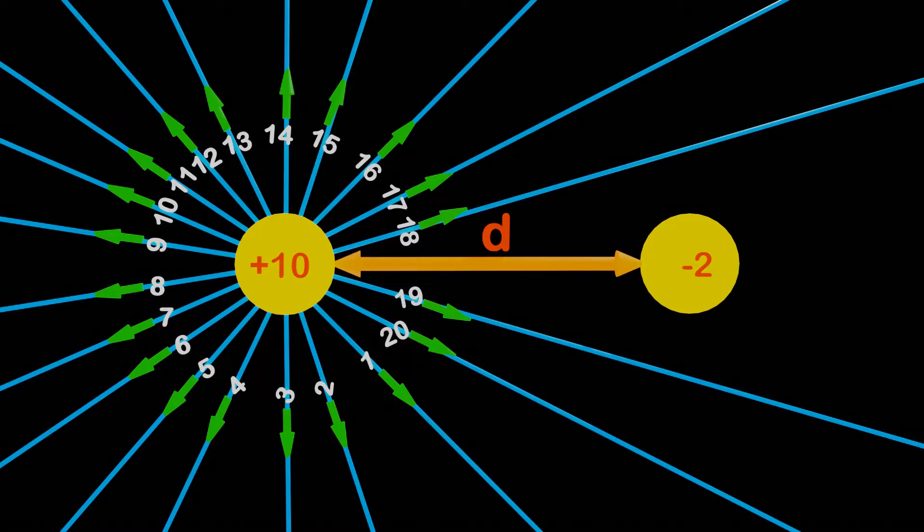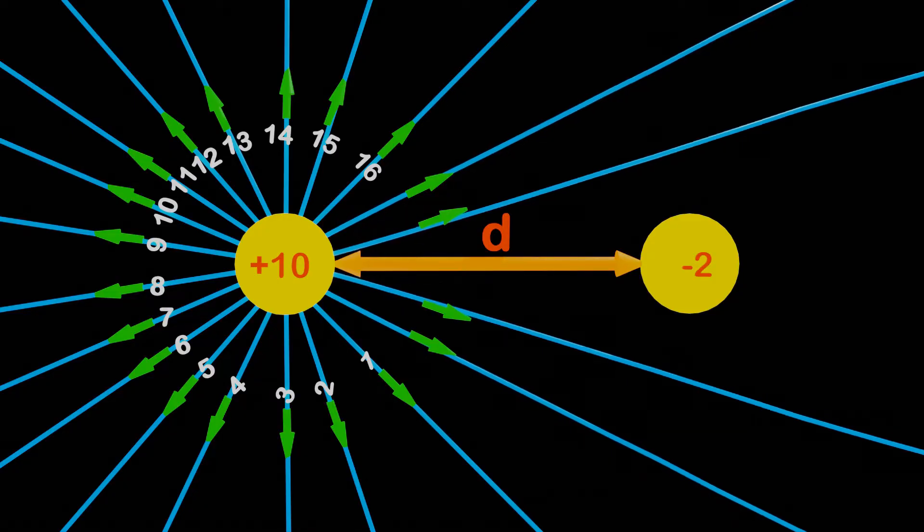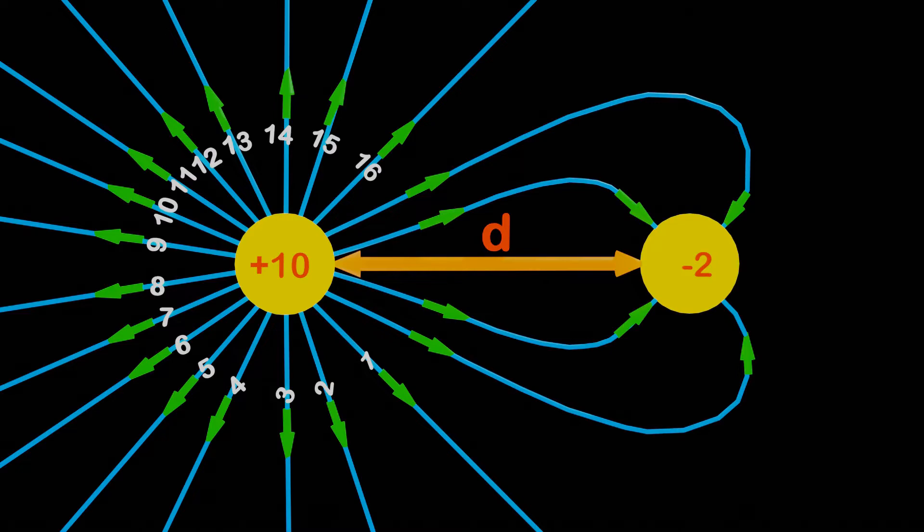According to our assumption, there should be 4 electric field lines originating from the positive charge and terminating on the negative charge, as the magnitude of the negative charge is 2.